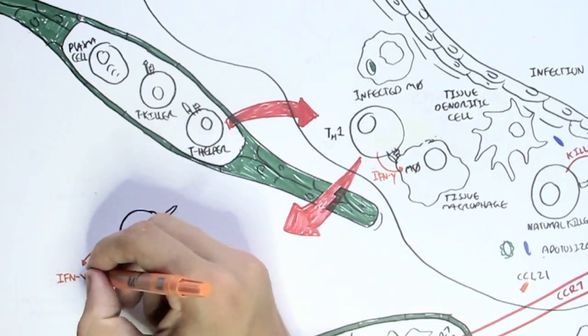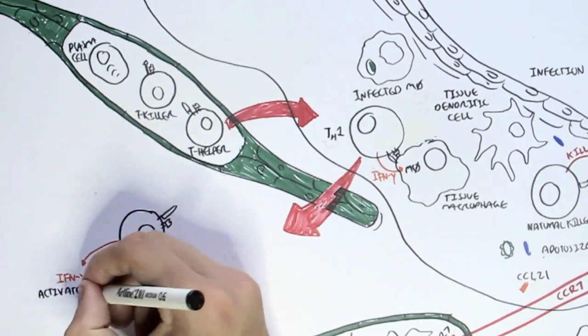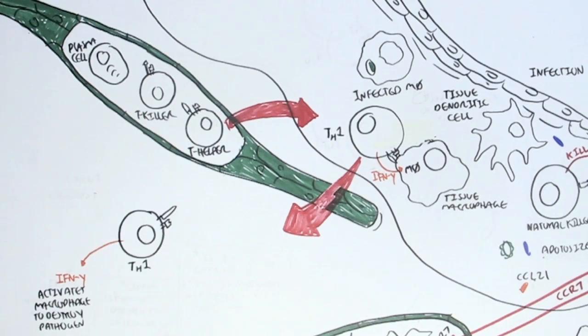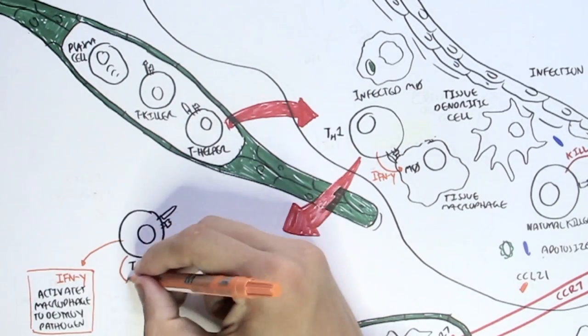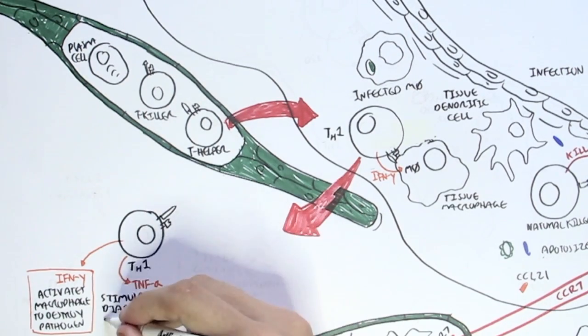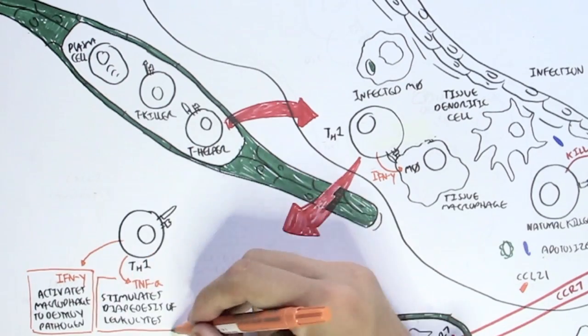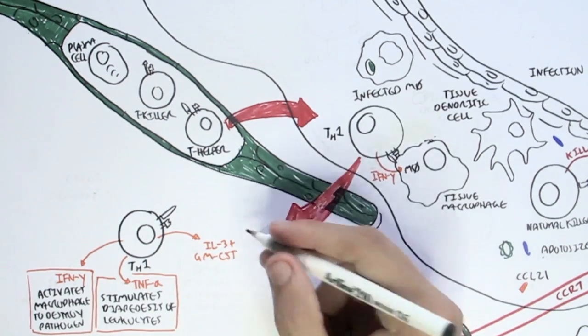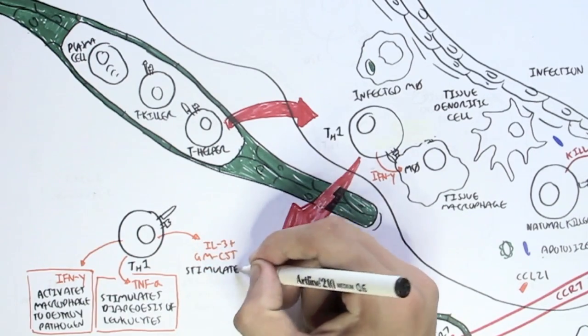So T helper 1 secretes interferon gamma, and this activates macrophages to destroy pathogens. T helper 1 also secretes TNF-alpha, which stimulates diapedesis of leukocytes, so that the leukocytes can enter the injured or damaged tissues or infected tissues much more easily.